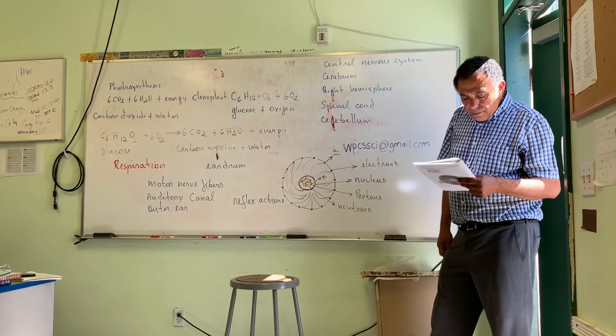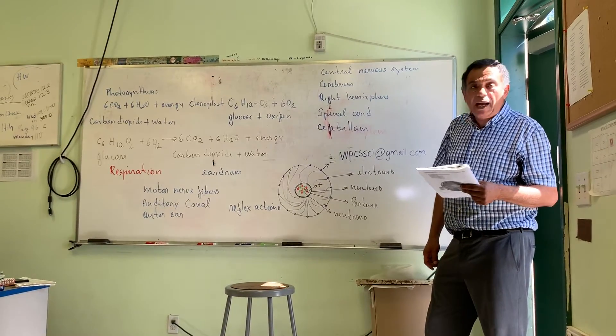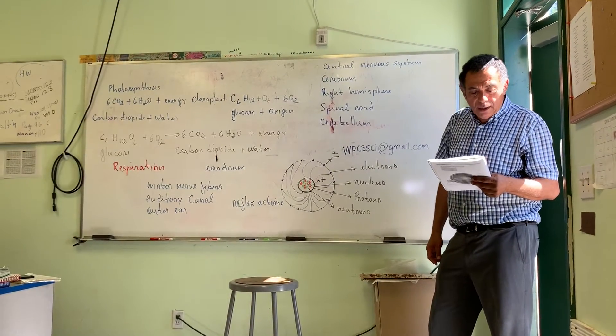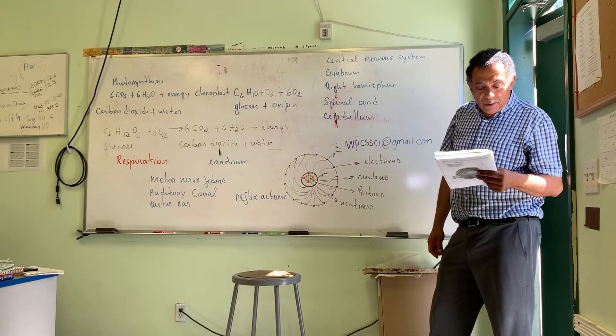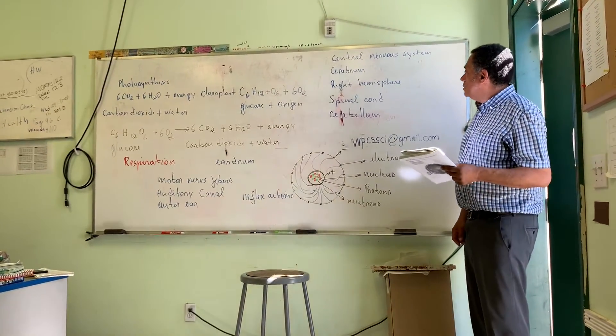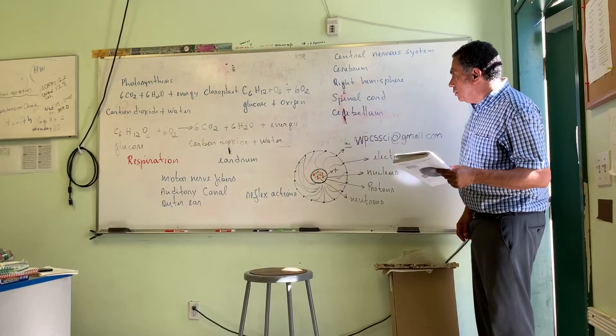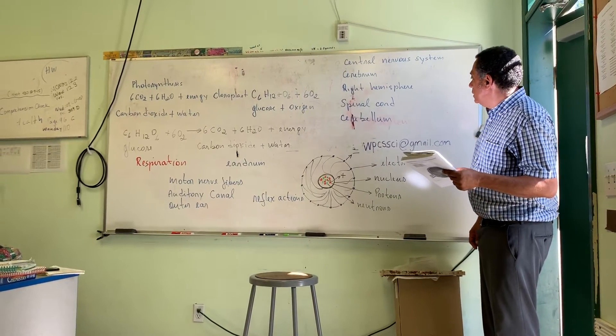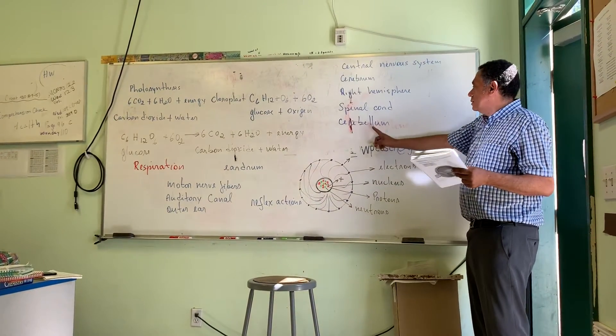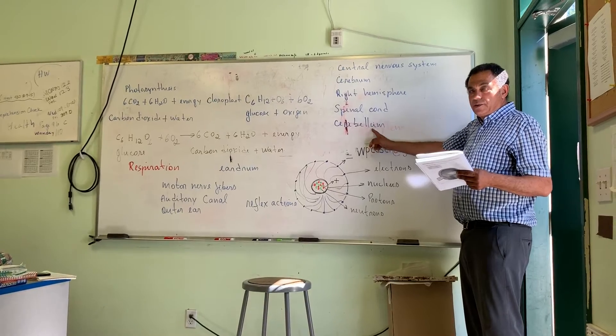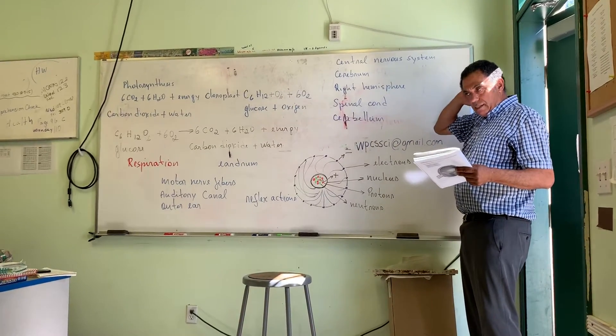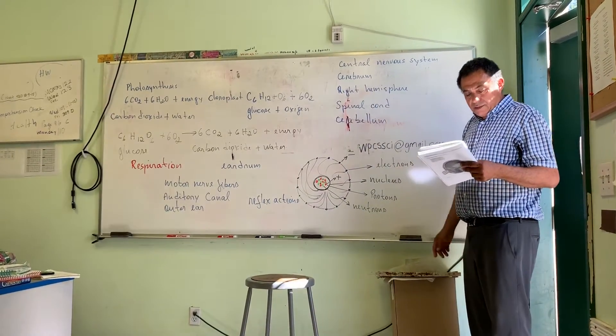Now, the next one. Helps with the balance and coordination. Helps with the balance and coordination. Balance and coordination. We have it here. The cerebellum. Cerebellum. Remember that I talked to you. This part right here. Cerebellum is for balance.